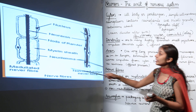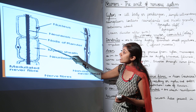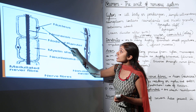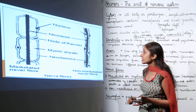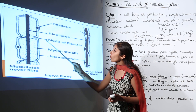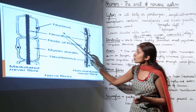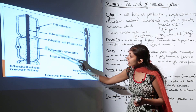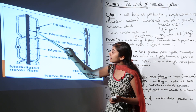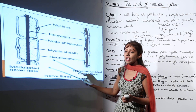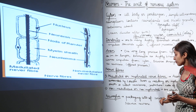In myelinated nerve fibers, the myelin sheath is not continuous — there are constrictions along it, and these constrictions are known as nodes of Ranvier.